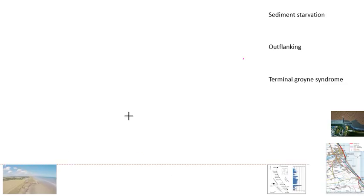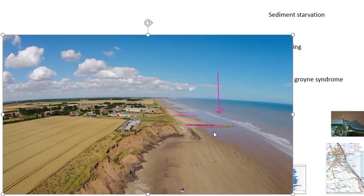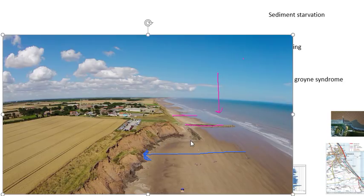Another photograph of the same place. Rock groin — longshore drift coming from north to south. You get a much wider, higher beach where the groin traps sediment. However, immediately after the groin has ended — that's the terminal groin, or the last groin — we've got coastal retreat. When erosion happens behind or to the side of the last groin, that's called outflanking. Eventually it'll curve around the back and erode that.